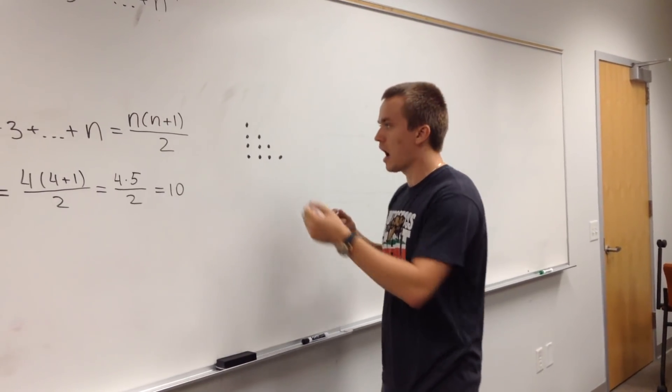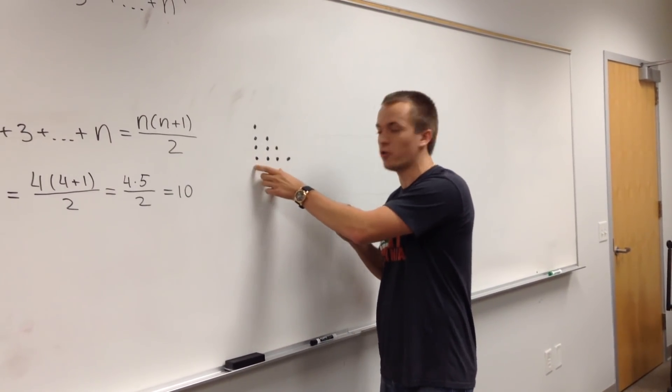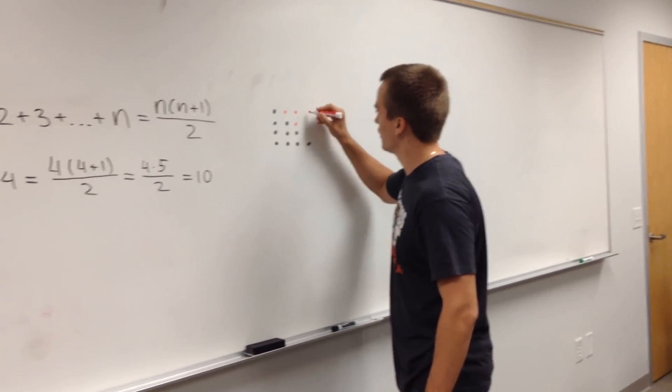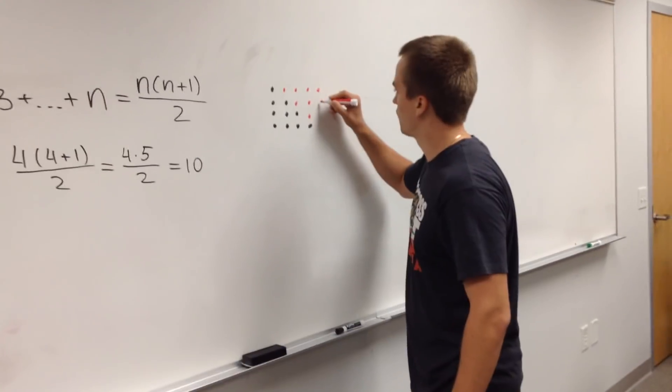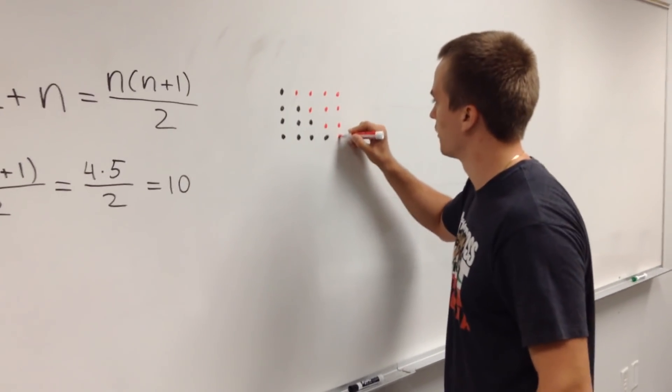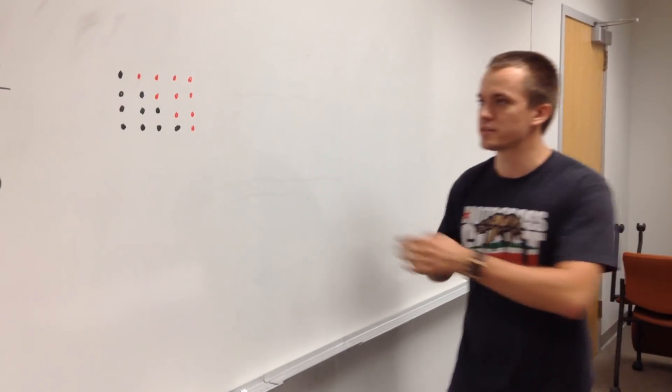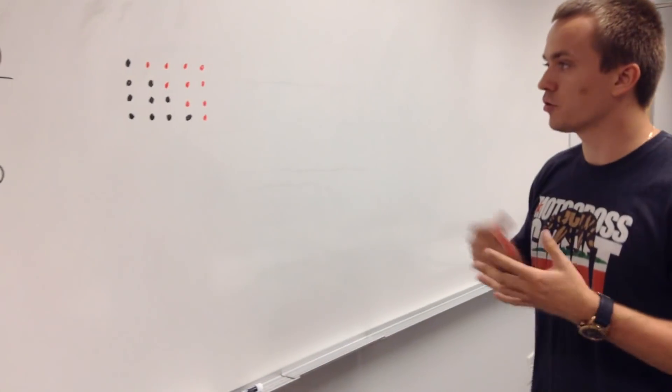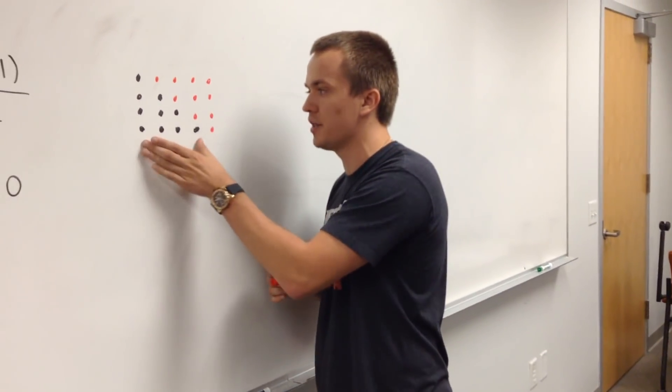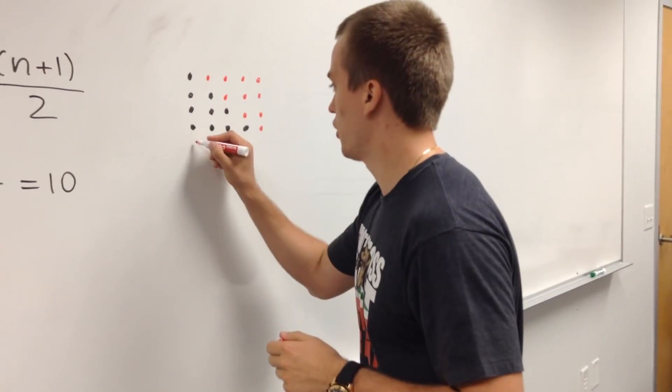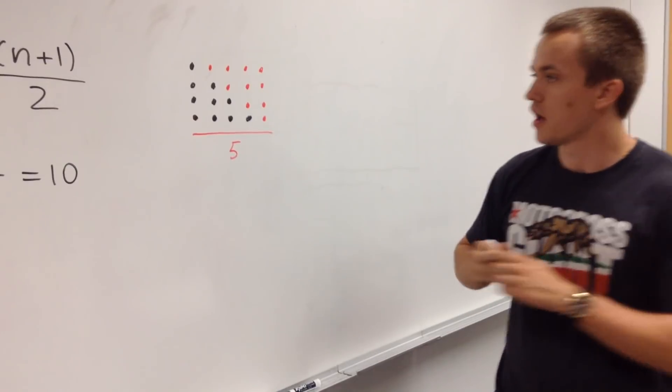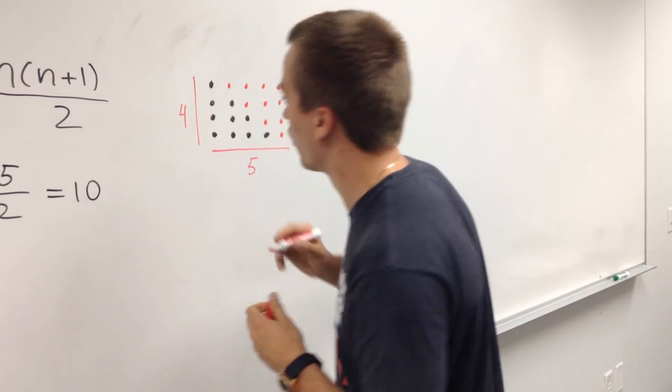So in this case what I'm going to do, I'm going to add the same amount of points. So we'll add red points here, 2 red points here, 3 red points here and 4 red points here. And so right now you can see instead of triangle, I have a rectangular. And what I'm going to do, I'm going to find how many points I have here. So my base consists of 5 points and my height consists of 4.